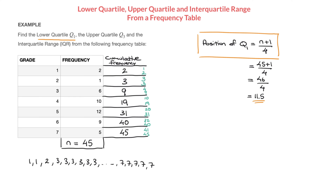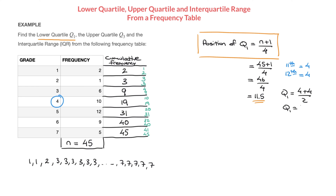Now we can quickly figure out the 11th and 12th values. Since all grades from position 10 to 19 are 4s, both the 11th and 12th values equal 4. Since Q1 lies between them, Q1 equals the average of the 11th and 12th values: (4 + 4) / 2 = 8 / 2 = 4. So the lower quartile Q1 is 4.